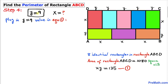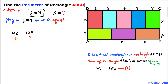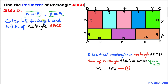Now that we know y equals 9, we can calculate x. Substituting y equals 9 into equation 1 — x times y equals 135 — we get 9x equals 135. Dividing both sides by 9, x equals 15.